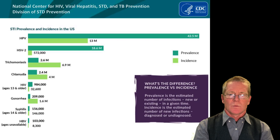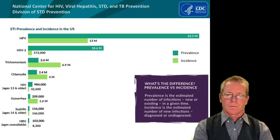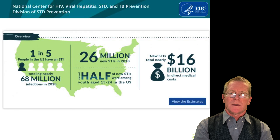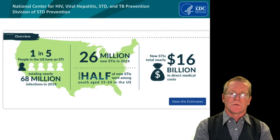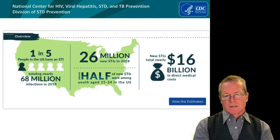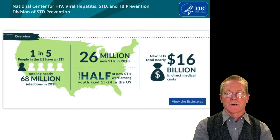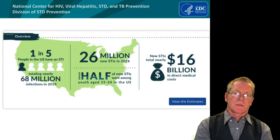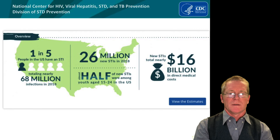Further down the list, chlamydia is one of the more common sexually transmitted diseases and is treatable, as are gonorrhea and HIV. In the United States, about one in every five people have suffered from a sexually transmitted infection — around 68 million infections in 2018, with 26 million new STIs. Half of those new STIs are among youth, college-aged people in the 15-to-24 age group. The cost to the United States is nearly 16 billion dollars a year; chlamydia, gonorrhea, and syphilis alone make up 1.1 billion dollars in direct medical costs.